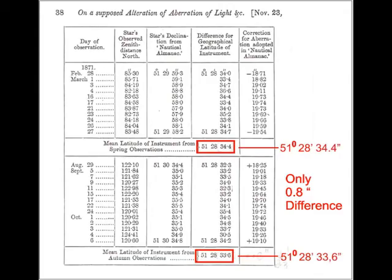In 1871, George Biddle Airy, the Astronomer Royal, performed this experiment. This is a copy from his original report. You can see that the two readings are virtually identical.